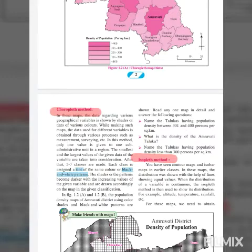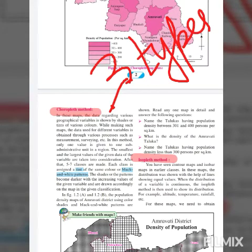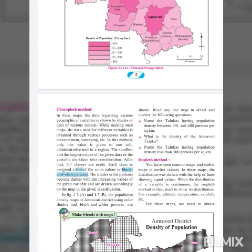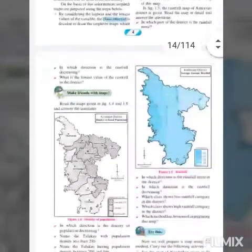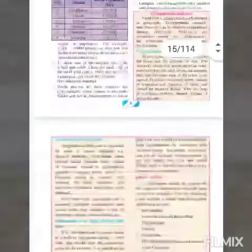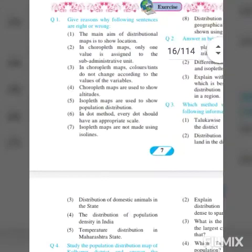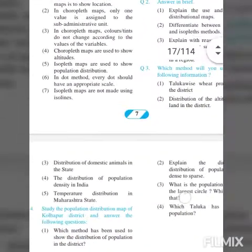Distributional maps are maps which show the distribution of various variables in a particular region. These are of three types: first is thematic maps, second is dot map, third is chloropleth map, and fourth is isopleth map. In this chapter, only the dot method, chloropleth method, and isopleth method are taught. We will be finding out the answers for these three types of methods.